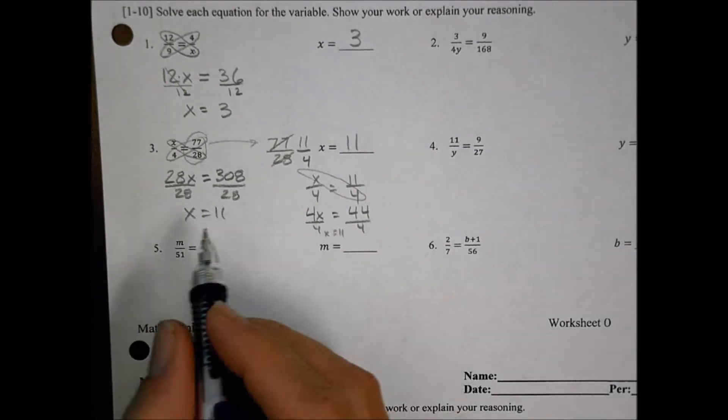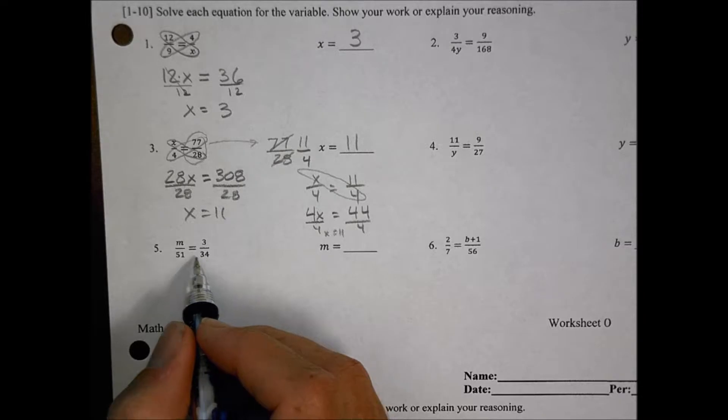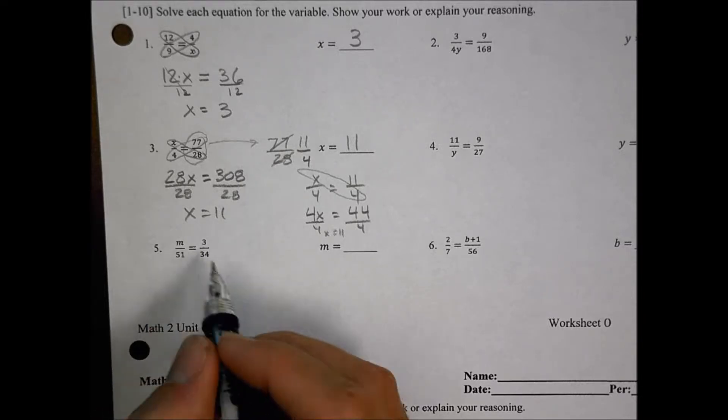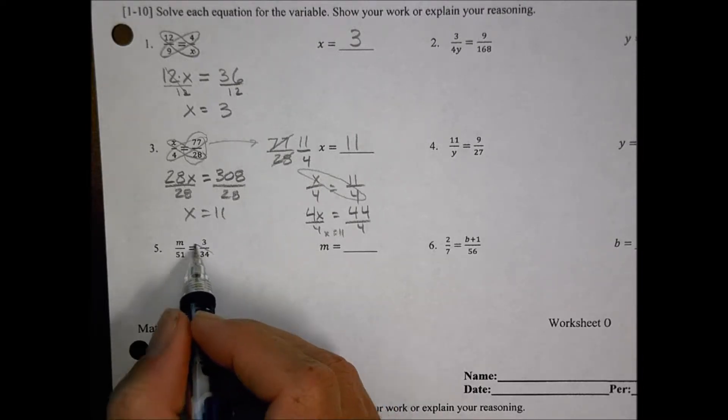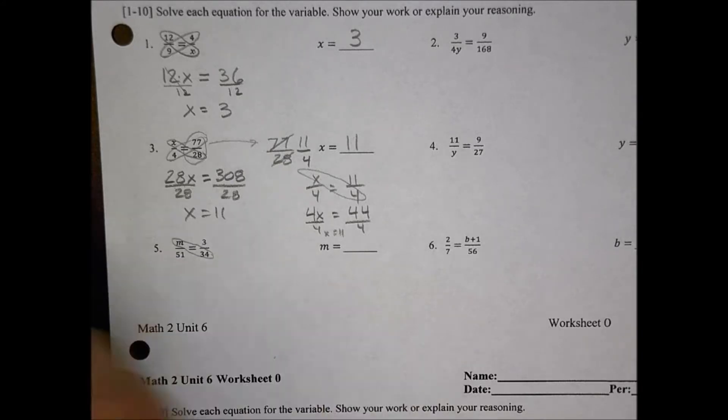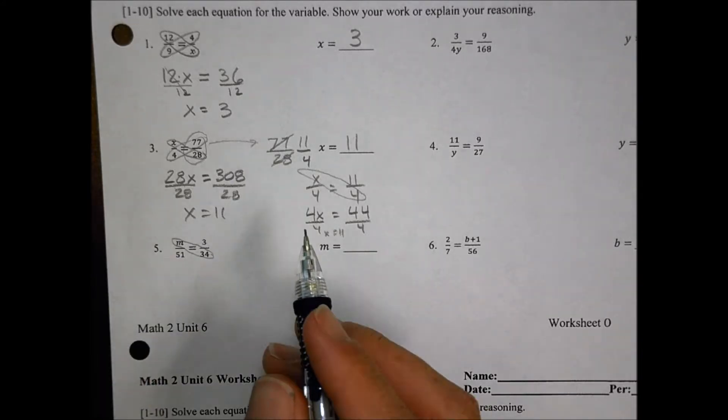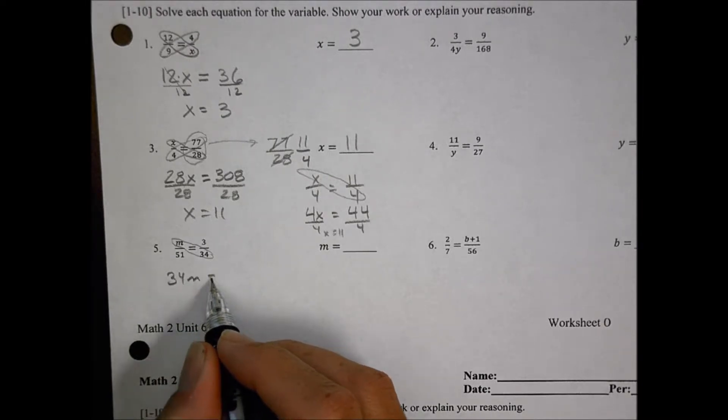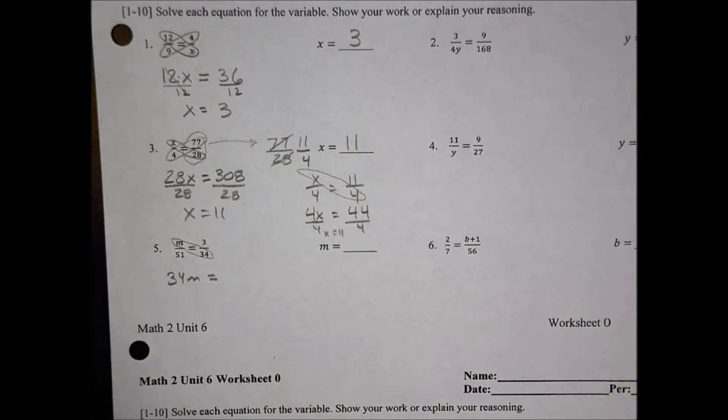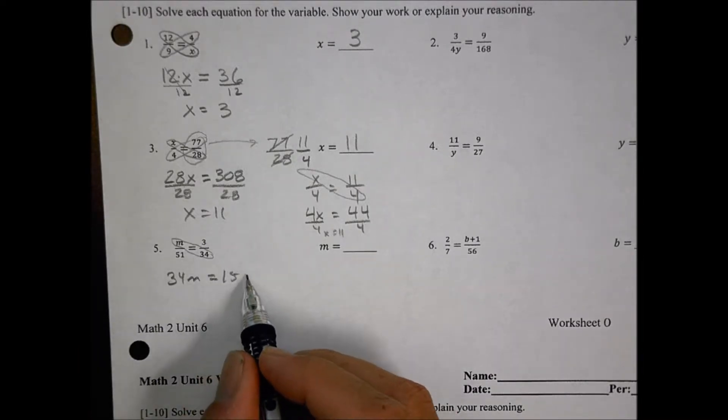For number 5, again, same idea, here we have m and 34 and 51 and 3. These are some, again, some large numbers. Is there a way to reduce that? 3 unfortunately does not go into 34, because 3 times 11 is 33, so it's not going to work. So I'm going to cross multiply, and as I cross multiply, I end up here with 34m. And I can set that equal to 3 times 51, and 3 times 51 is 153.